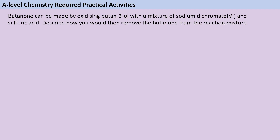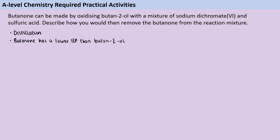Just before I get started on the actual method, it's worth saying that this question is about distillation. The reason that we can use distillation to separate the butanone in this instance is because it has a lower boiling point compared to the secondary alcohol it's been synthesized from. The reason for that is that the alcohol has hydrogen bonds between the molecules, whereas butanone molecules are only going to have van der Waals interactions between them, which are weaker. So therefore it has a lower boiling point.